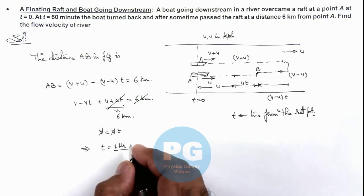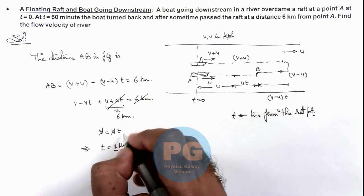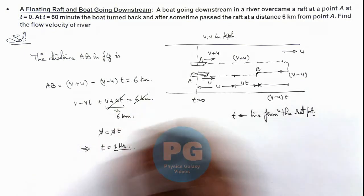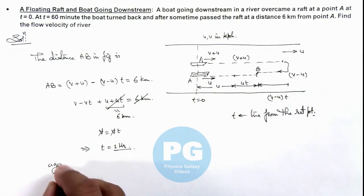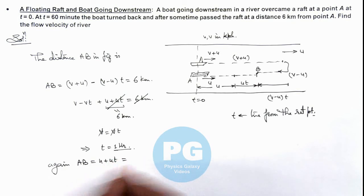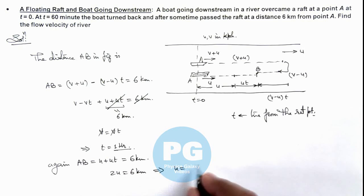This simplifies to t equals one hour. If we substitute this value into the distance equation: AB equals u plus ut equals 6 kilometers. Substituting t as one hour gives 2u equals 6 kilometers. This implies u equals 6 divided by 2, which is 3 kilometers per hour. This is the answer to our problem.